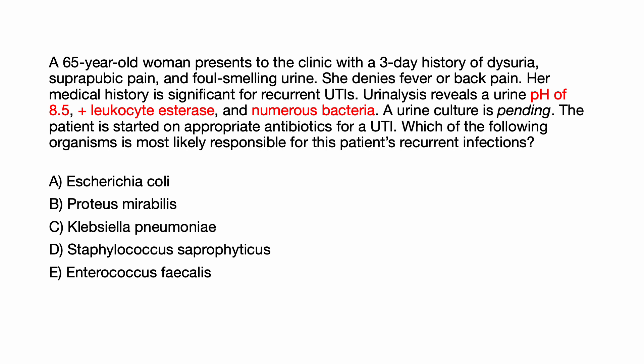Here's a case of a 65-year-old female who presents to the clinic with a 3-day history of dysuria, suprapubic pain, and foul-smelling urine. She denies fever or back pain. Her medical history is significant for recurrent UTIs. Urinalysis reveals a urine pH of 8.5, positive leukocyte esterase, and numerous bacteria. A urine culture is pending. The patient is started on appropriate antibiotics for a UTI. Which of the following organisms is most likely responsible for this patient's recurrent infections: E. coli, Proteus, Klebsiella, Staph, or Enterococcus?